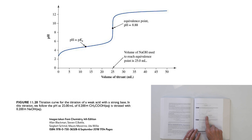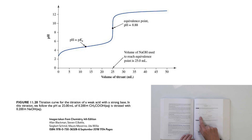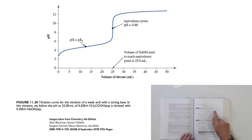Now here we go — weak acid/strong base titration. You can see pretty immediately there are some differences. For starters, we're not starting at such a low pH, because now we've got a weak acid: 0.2 molar acetic acid, starting at a pH around about 2.7. We get a curve here, and then as we approach 25 mL, a sudden change in pH which is not as great. The big difference is the pH of the equivalence point — it's now on the basic side of 7 at pH 8.88.